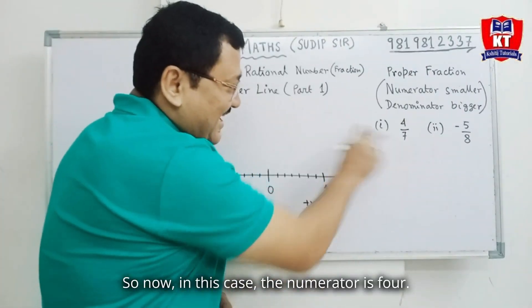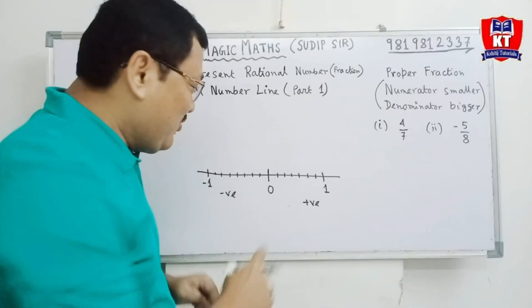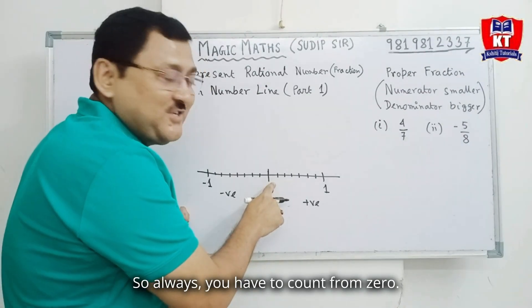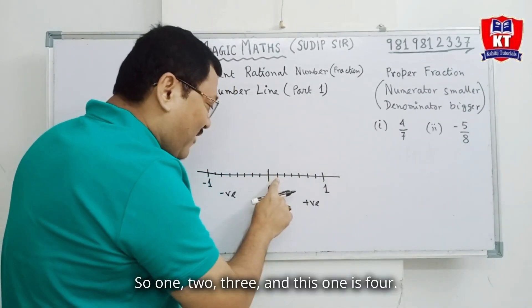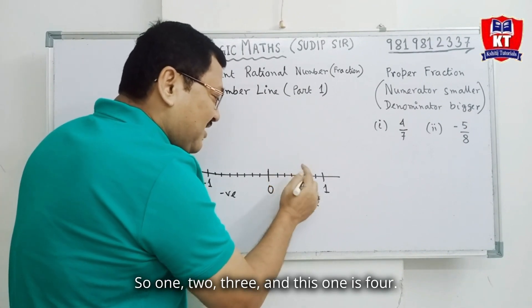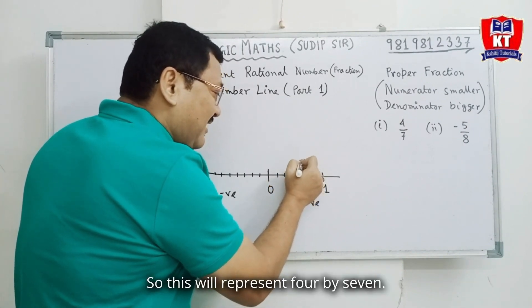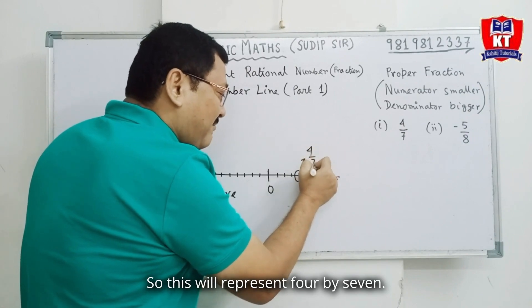So, now, in this case, the numerator is 4. So, always you have to count from 0. So, this is positive side. So, I will count from this side. So, 1, 2, 3, and this one is 4. So, this will represent 4 by 7.